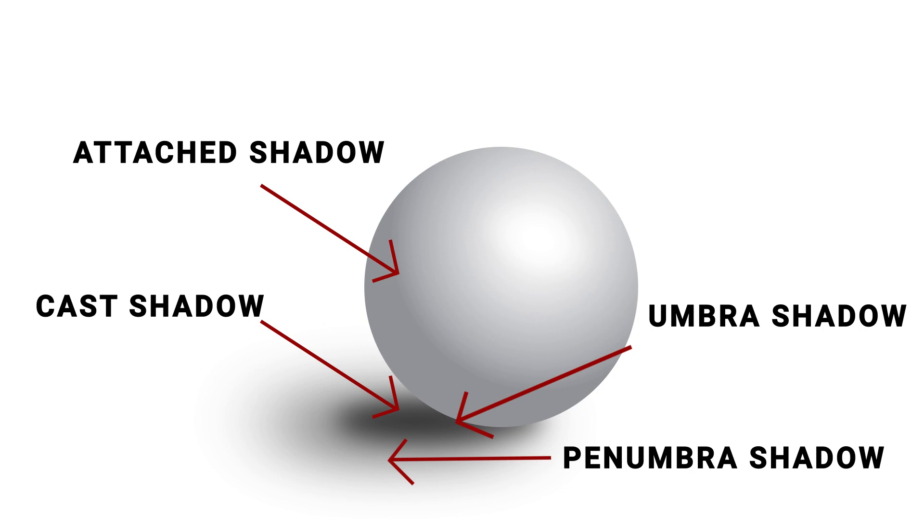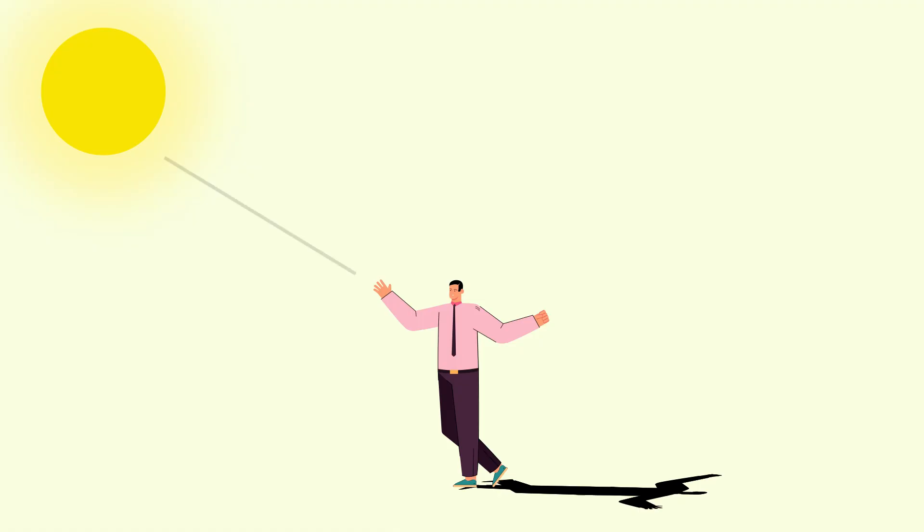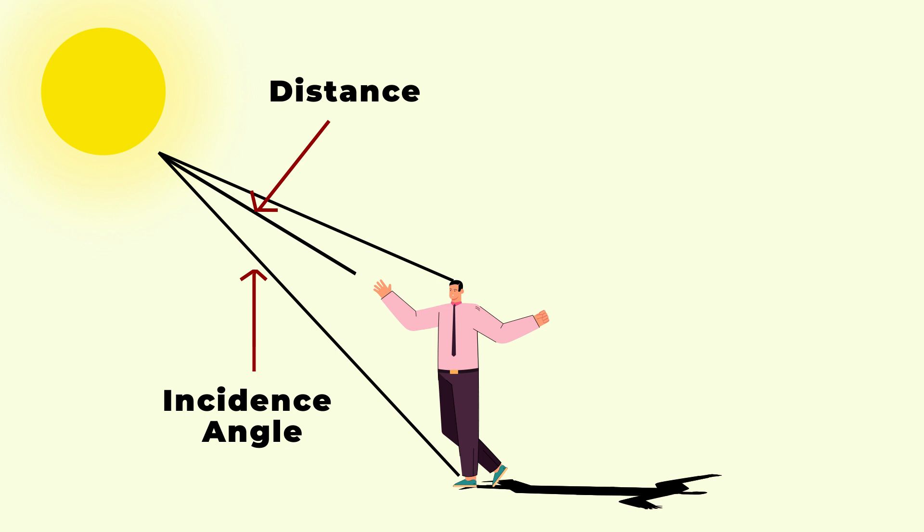Since a shadow's shape is affected by the shape of the object, the distance between the light source and the object, and the angle of light incidence, we can use shadows as art.